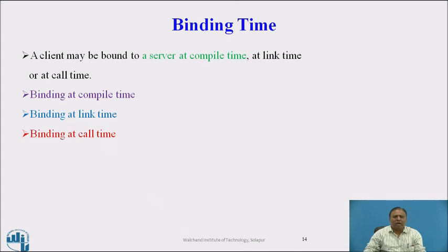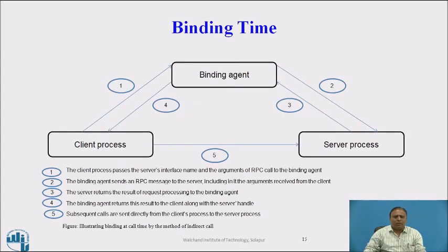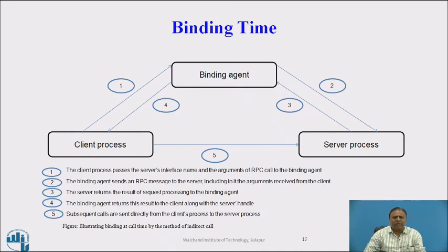Binding at call time: a client is bound to the server at the time it calls the server for the first time during execution. It uses an indirect call method. This figure illustrates binding at call time using indirect call, with three components: binding agent, server process, and client process, in five steps. First, the client process passes the server's interface name and the RPC call arguments to the binding agent. Second, the binding agent sends an RPC message to the server including the arguments received from the client. Third, the server returns the result to the binding agent. Fourth, the binding agent returns the result to the client along with the server's handle. Fifth, subsequent calls are sent directly from the client process to the server process. Once the connection is established, multiple messages can be transferred between client and server.